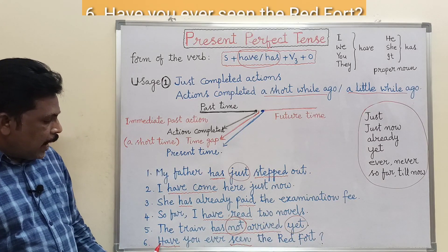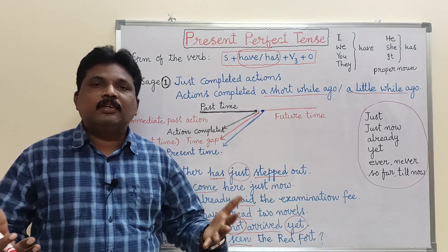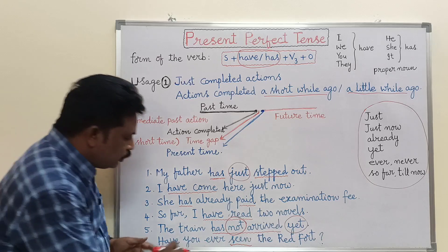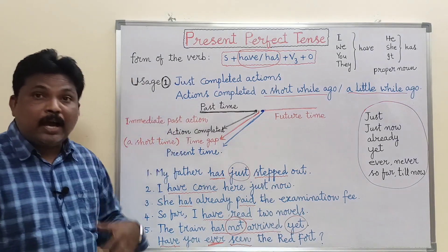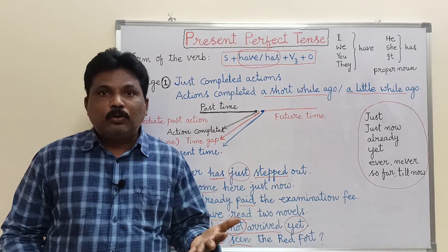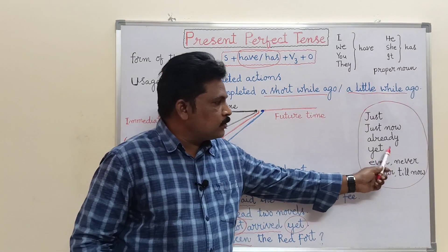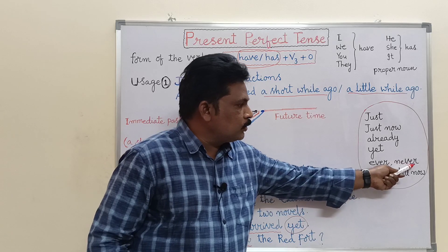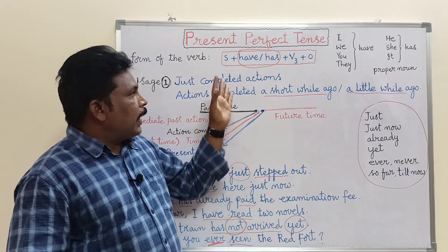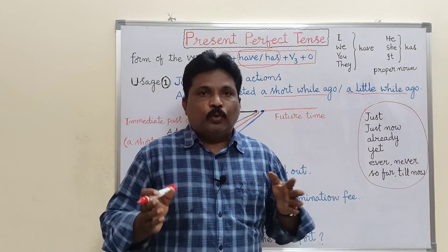Another example: 'Have you ever seen the Red Fort?' You can also ask interrogative sentences using the same structure. 'Have you ever seen the Taj Mahal?' 'Have you ever seen the Golconda?' Sometimes we give a positive answer, sometimes a negative answer. For a negative answer, the word 'never' is used: 'I have never seen the Taj Mahal.' This covers actions completed a short while ago or a little while ago.